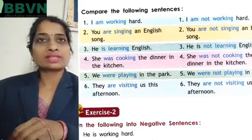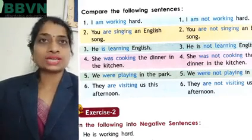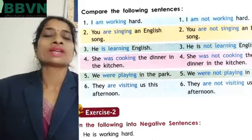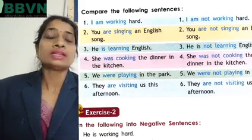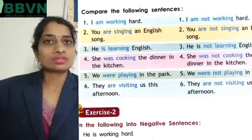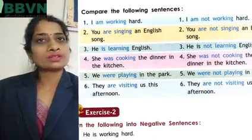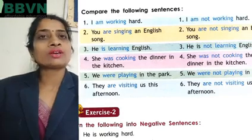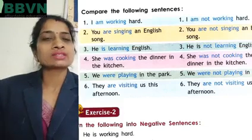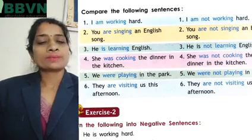It's very simple. Jab bhi aap se puchha jaye ki sentence ko negative banana hai, to jis bhi sentence mein 'is,' 'am,' 'are,' 'was,' 'were,' 'will,' 'shall' hoga, wahan par aap unke baad 'not' laga doge aur sentence ko negative bana doge. In exercise one there are some sentences given.